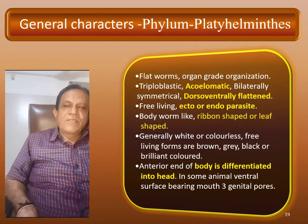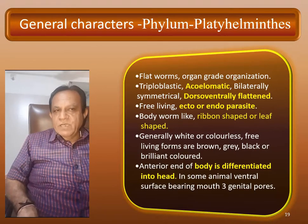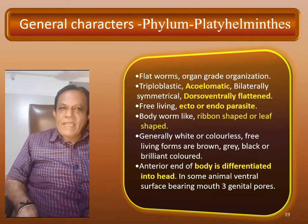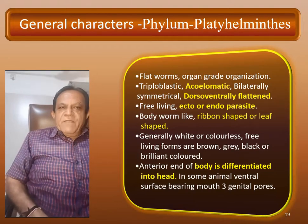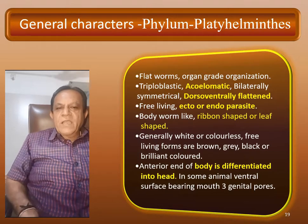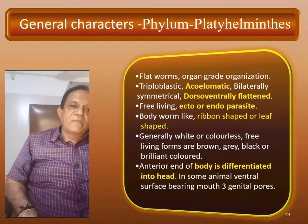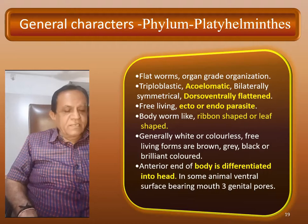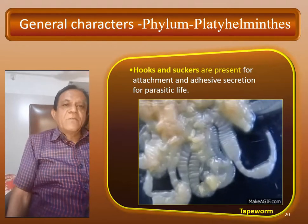General characters or features of the Platyhelminthes phylum: flat worms, organ-grade organization, triploblastic, acoelomate, bilateral symmetry, dorso-ventrally flattened, free living or ecto- or endo-parasites, body worm-like ribbon shape or leaf shape, generally white or colourless. Free living forms are brown, grey, black, or brilliant colours. Anterior end of body differentiated into head. Some animals have ventral surface bearing mouth and genital pores. Hooks and suckers are present for attachment and adhesive secretion for parasitic life.